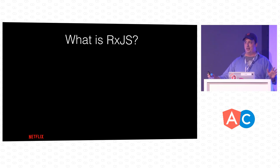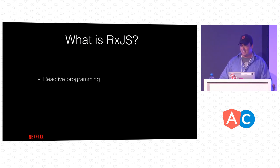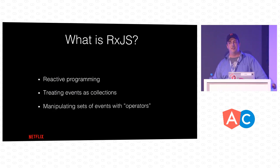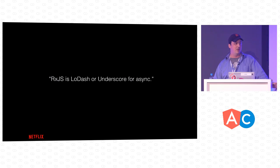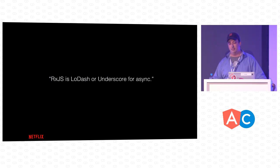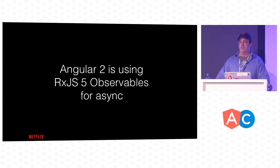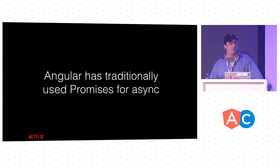So I just told you all about RxJS 5, but what is it? It's reactive programming — you can treat events as collections, and manipulate those sets of events with operators. Another way I've heard it put: RxJS is Lodash or Underscore for async, because you can treat all your events as a set. Angular 2 is using RxJS 5 observables for async, whereas Angular has traditionally used promises.